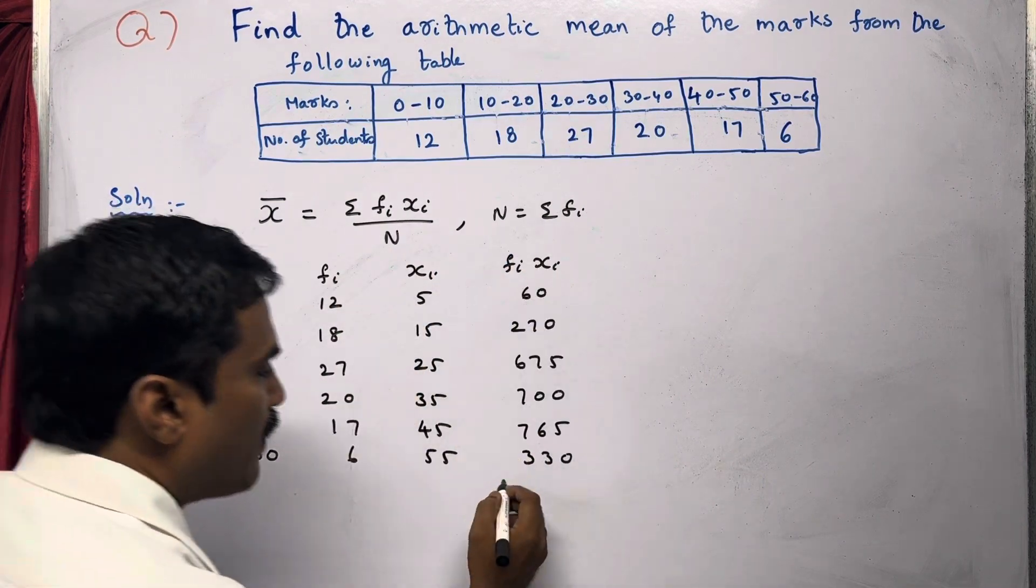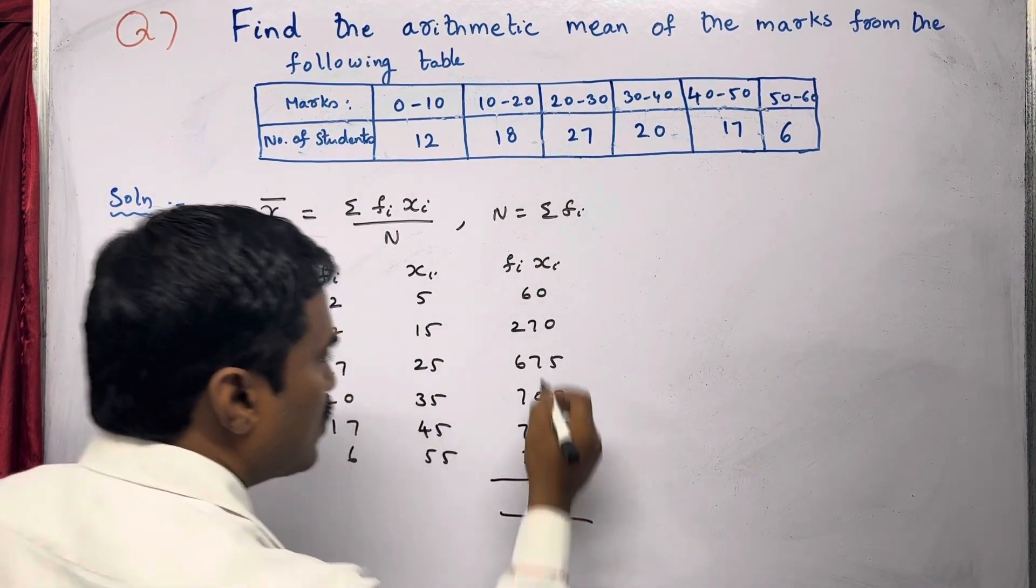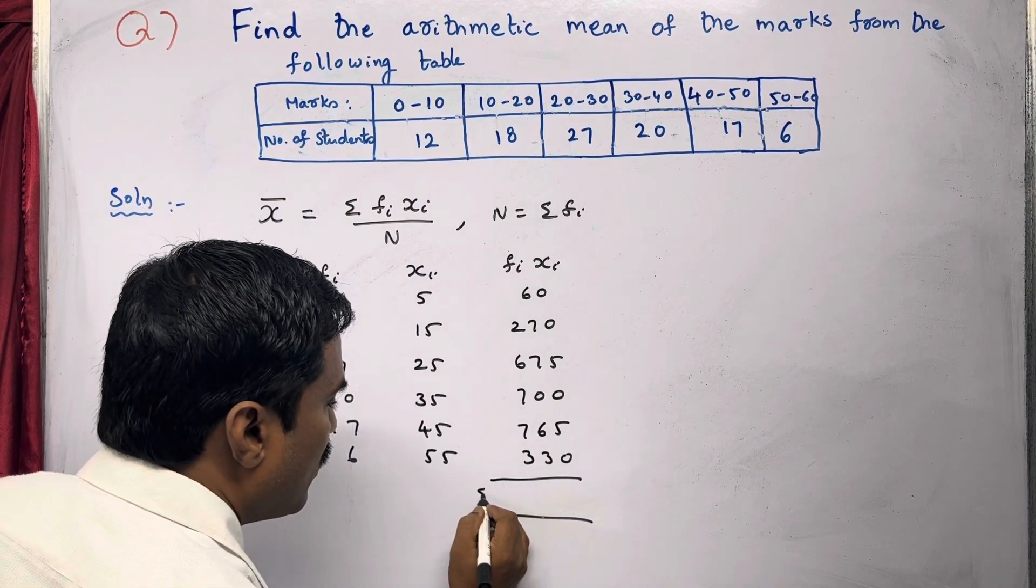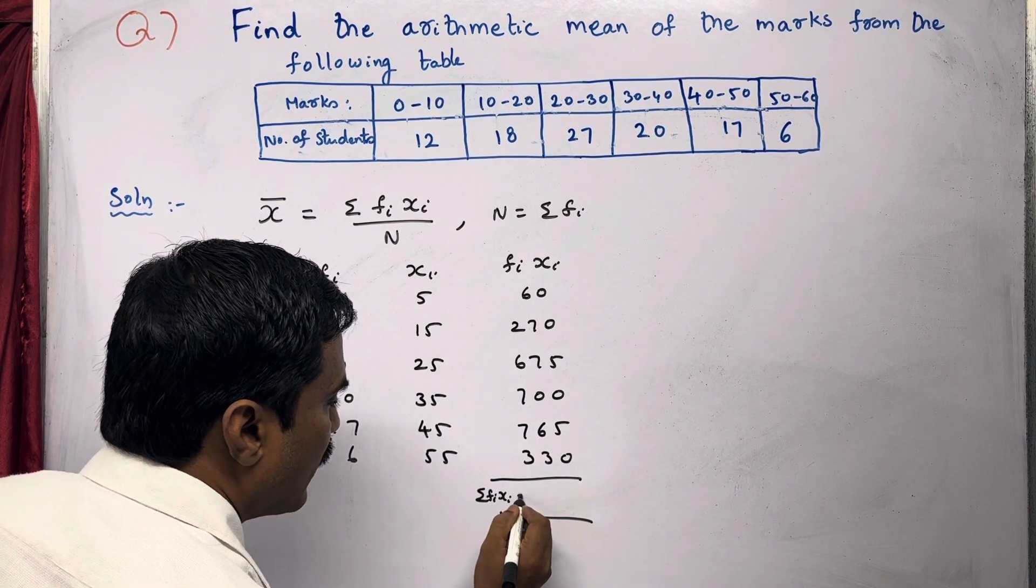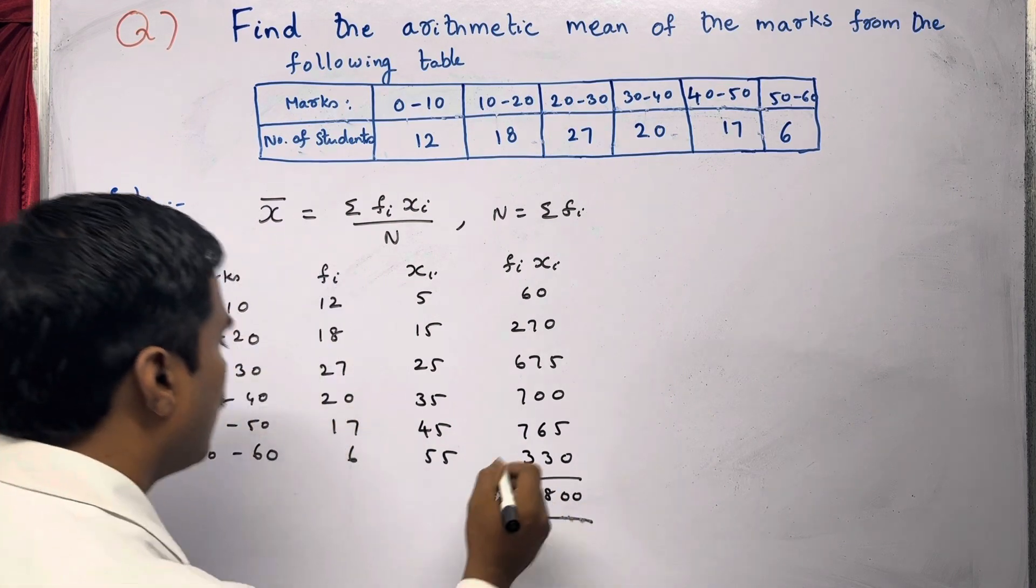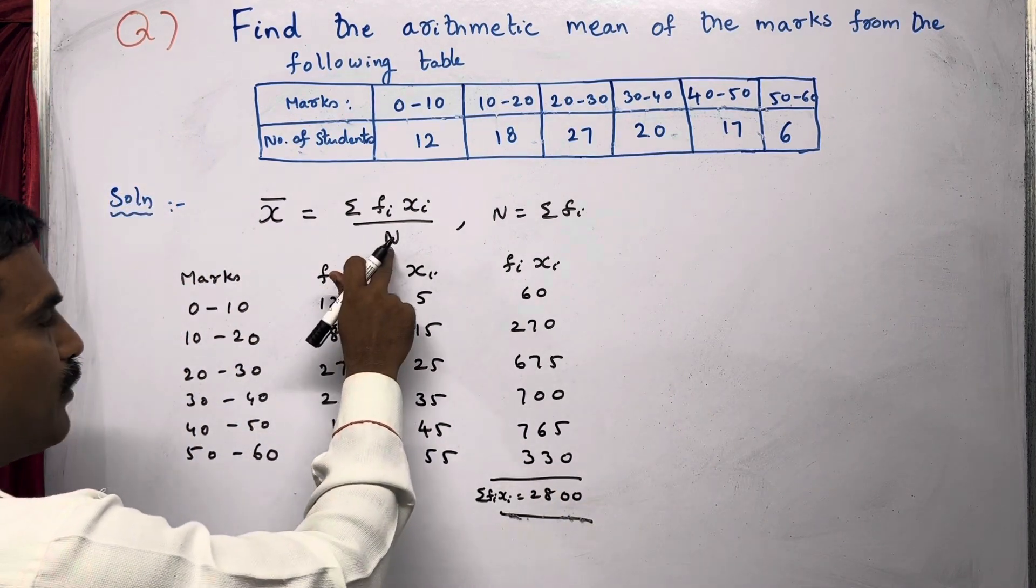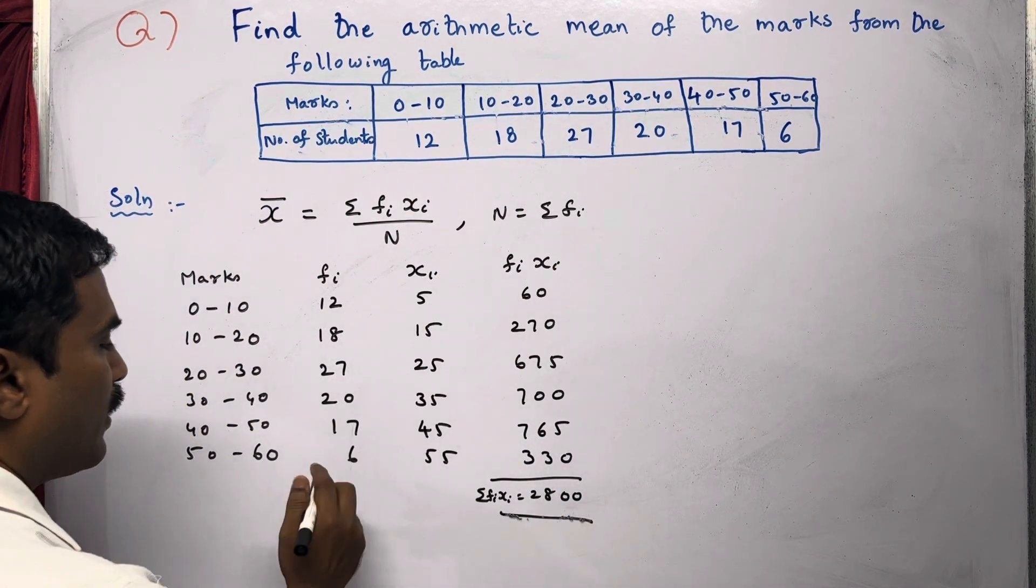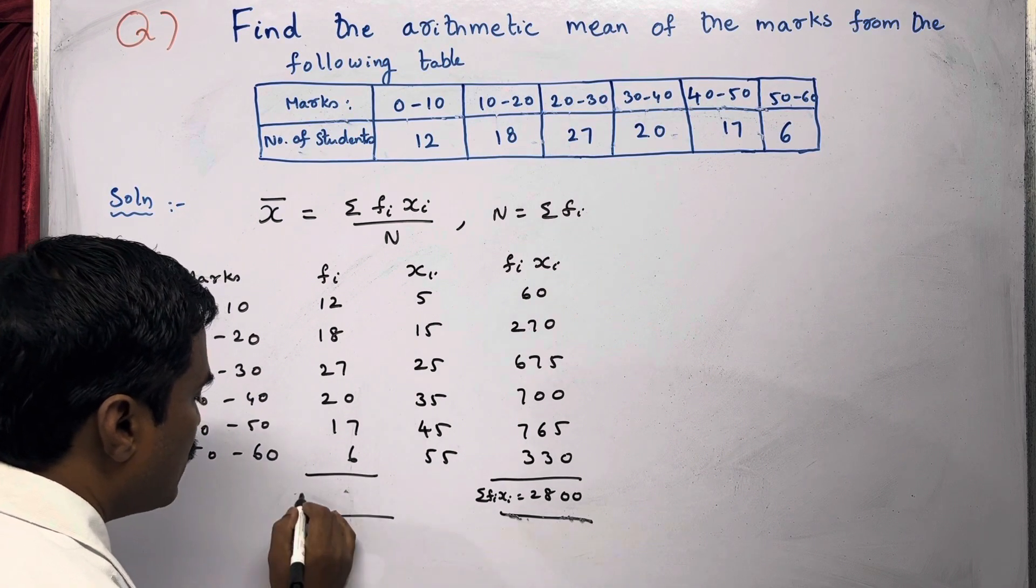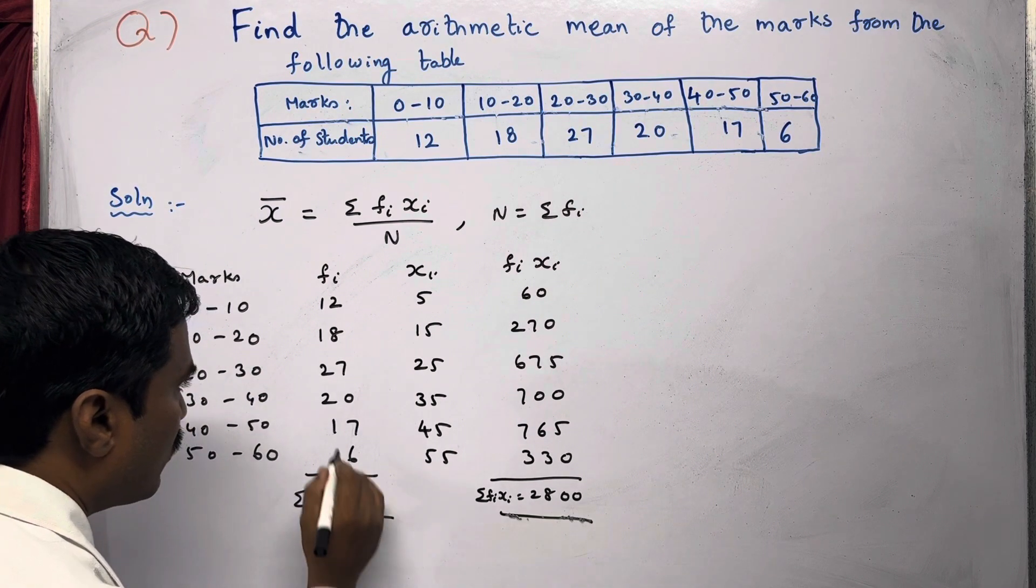Since we need to find ΣFi × Xi, we add all these values. Adding, we get ΣFi × Xi = 2800. Now we also need to find N, which is ΣFi. Adding all the frequencies, we get ΣFi = 100.